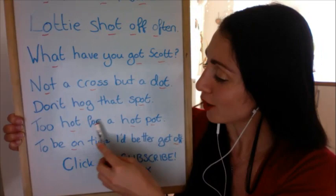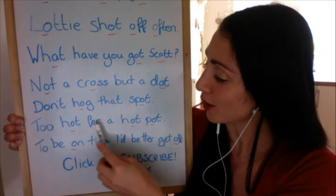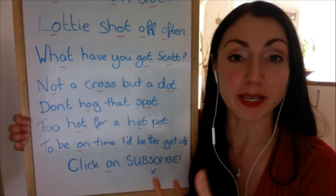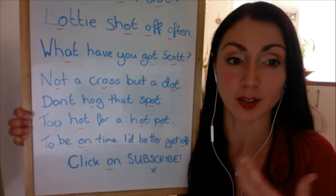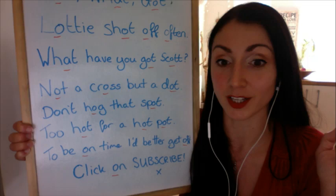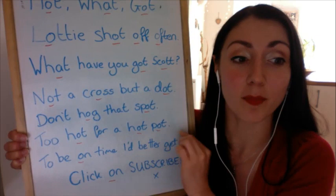Don't forget: 'Too hot for a hot pot.' A hot pot is a dish — a meal, like a stew. It's meat and potatoes in stock, all boiled together to make a very tasty stew. So: 'Too hot for a hot pot' — today it's too hot to eat a hot pot. 'Too hot for a hot pot.'